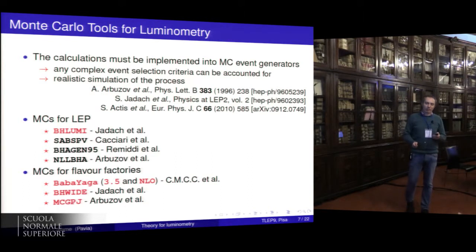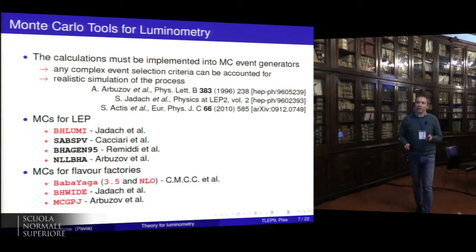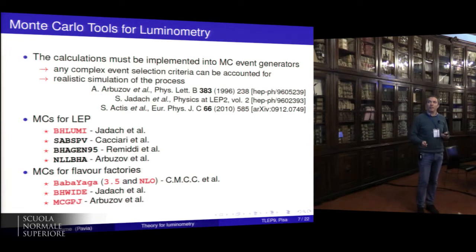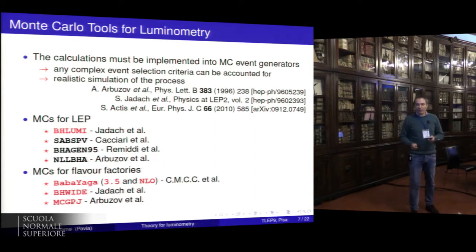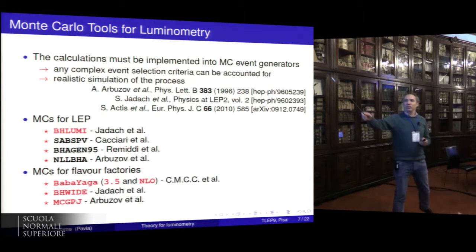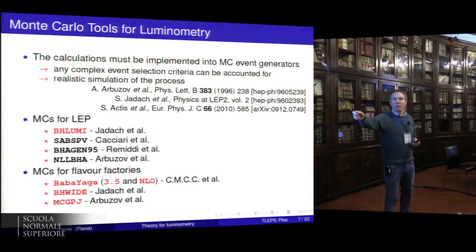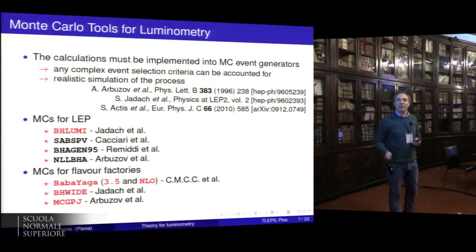An important point is that the calculation should be implemented and available in Monte Carlo event generators, because this is the only way to take into account very complex event selection criteria due to the luminometry conditions. This is what was done in the past: a number of Monte Carlo generator tools were developed specifically for luminometry. For LEP, BhLumi was the reference program, carefully cross-checked with independent calculations, and for the flavor factories there are different tools used in the various experiments.